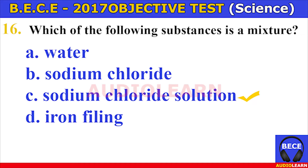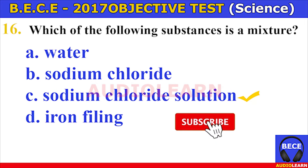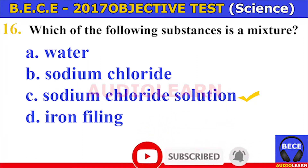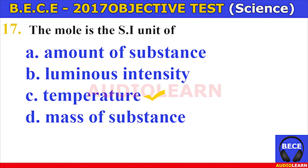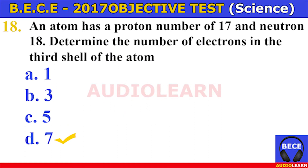Number sixteen. Which of the following substances is a mixture? A. Water, B. Sodium chloride, C. Sodium chloride solution, D. Iron filing. The answer is C. Sodium chloride solution. Which of the following substances is a mixture? The answer is sodium chloride solution.